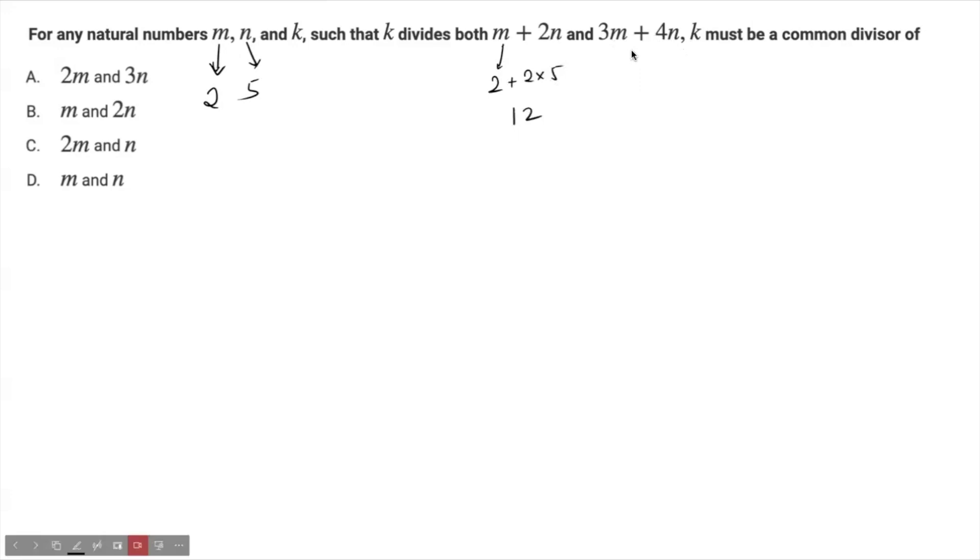And 3m+4n will be 3×2 plus 4×5. What's 3×2? 6. 6 and 20 is 26. They're saying k must be a common divisor of both these numbers. You can very clearly see these two numbers only have one common divisor.